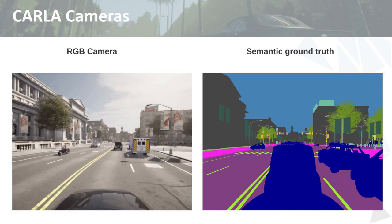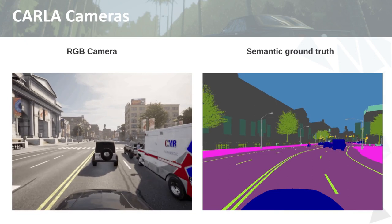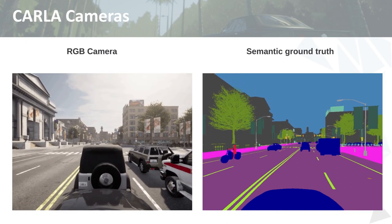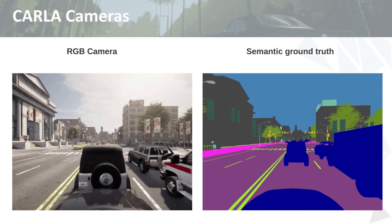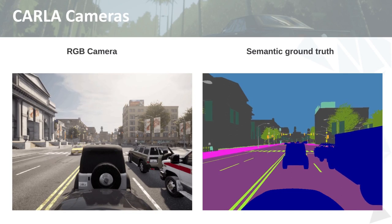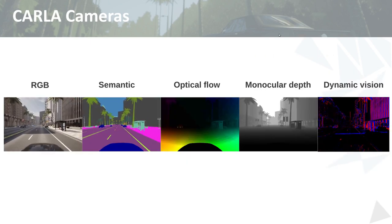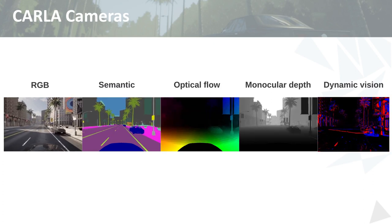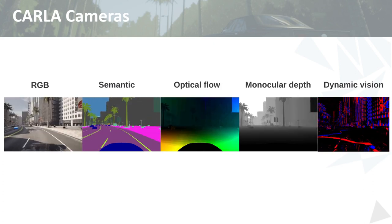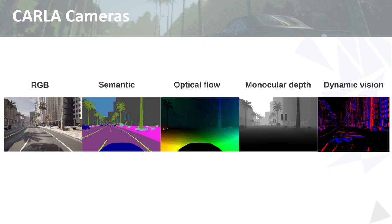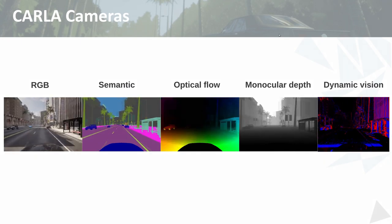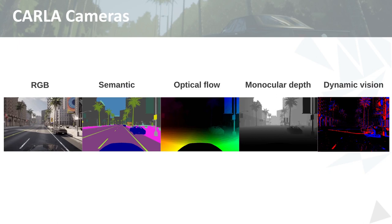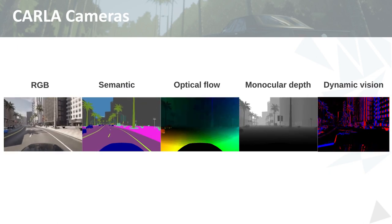We not only provide a simulation of a real-world sensor but also provide access to the ground truth data, and that's exactly what we do with the different types of cameras. Since contemporary autonomous driving research supports a multimodal approach, and there are numerous methods for using things like monocular depth and optical flow, CARLA provides an array of different camera types to support these multimodal approaches.